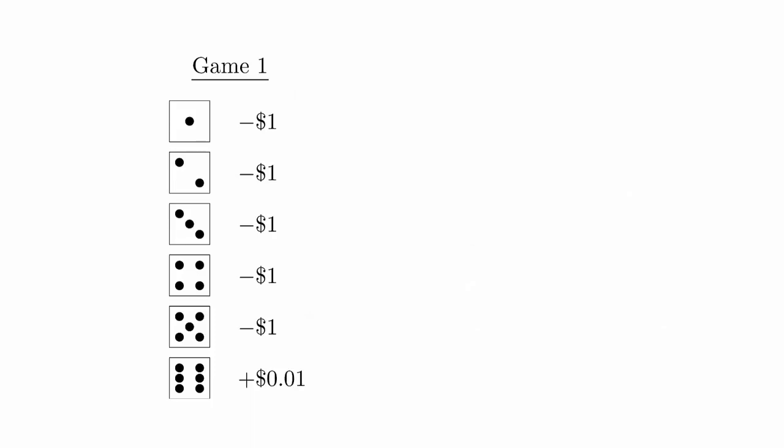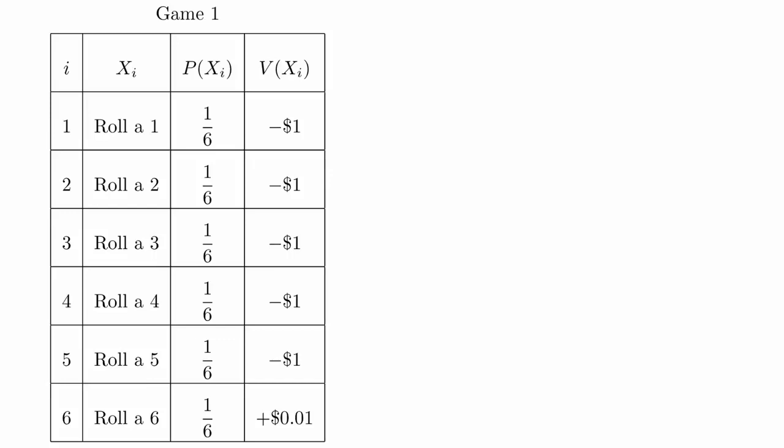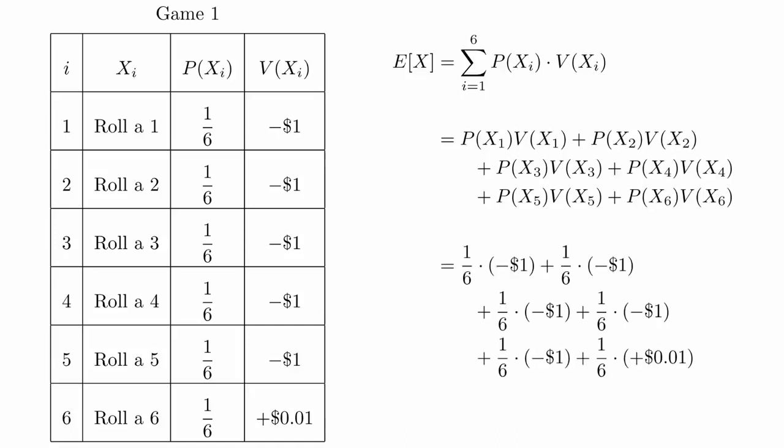For the first game we discussed, there are six outcomes. We will let xi represent the outcome of rolling the number i and put all this information into a chart. When we expand out the summation notation, it looks like this. And then we substitute the probabilities and values for each of the outcomes, and it becomes this. Notice that losing money is a negative outcome, and winning money is a positive outcome.